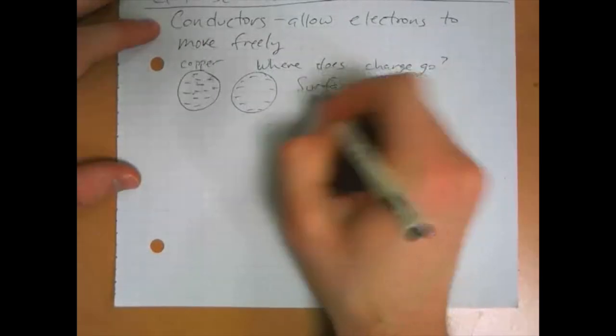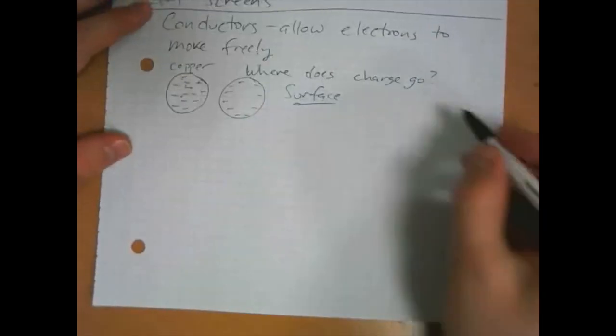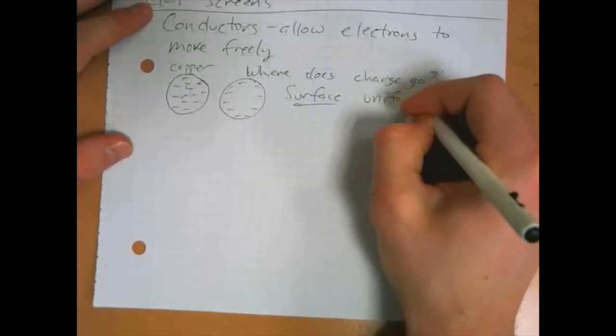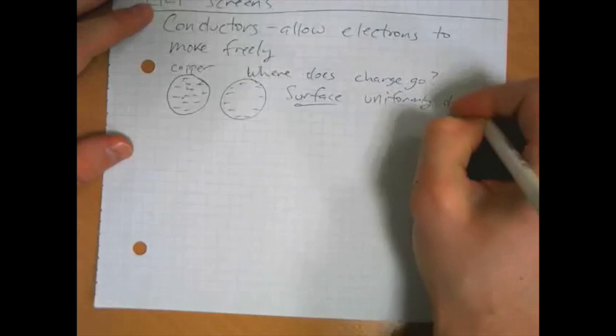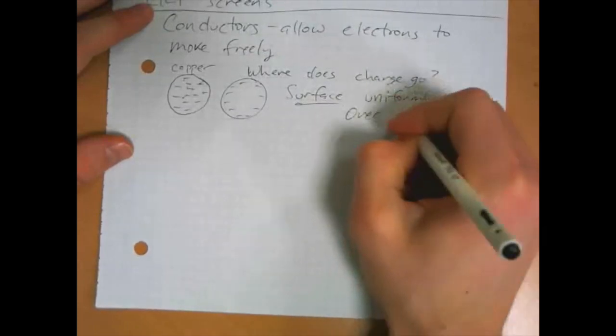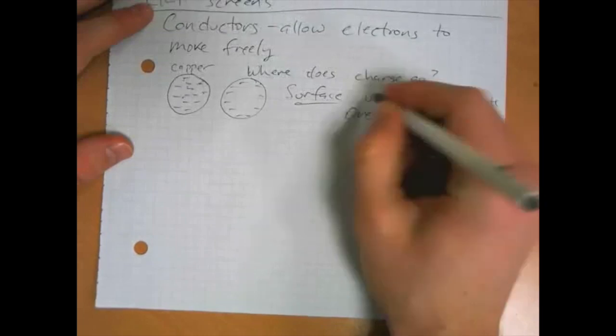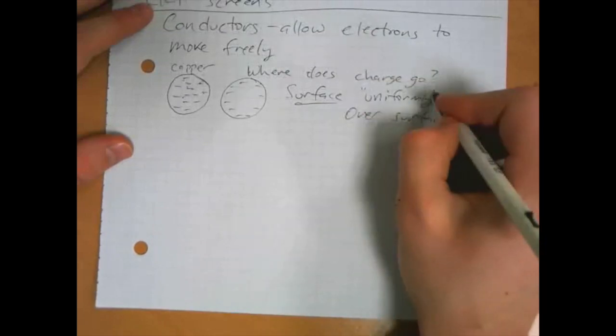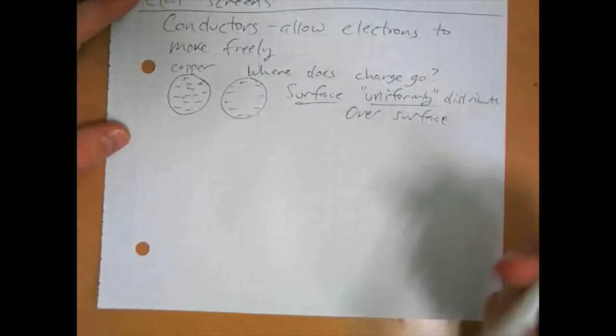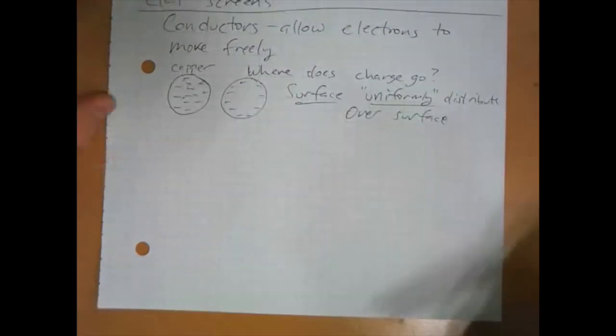So in a conductor, charge will always uniformly distribute over the surface. And I'm going to put uniformly in quotes. If it's a uniform object like a sphere, it will be distributed uniformly. If it's an odd shape, it works a little bit differently, and I'll talk about that in a minute.